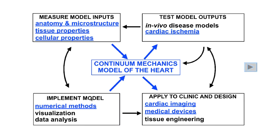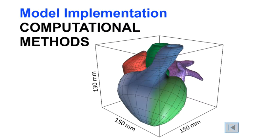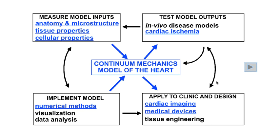To solve the continuum mechanics model that takes into account the complex geometry and fiber architecture, nonlinear mechanical properties, and dynamic contractile properties, we need to use computational methods. This is an example of a finite element model of the heart showing the right ventricle, left ventricle, right atrium, left atrium, pulmonary artery and aorta. The complex geometry is divided up into smaller simpler shapes to facilitate the analysis on a computer.